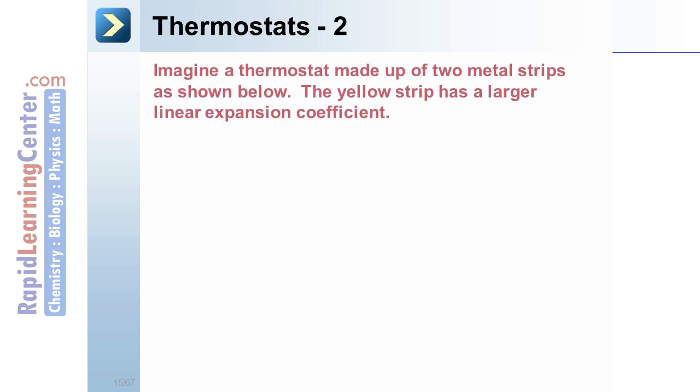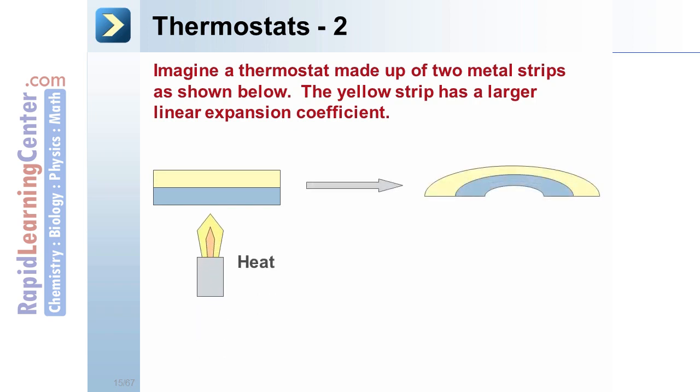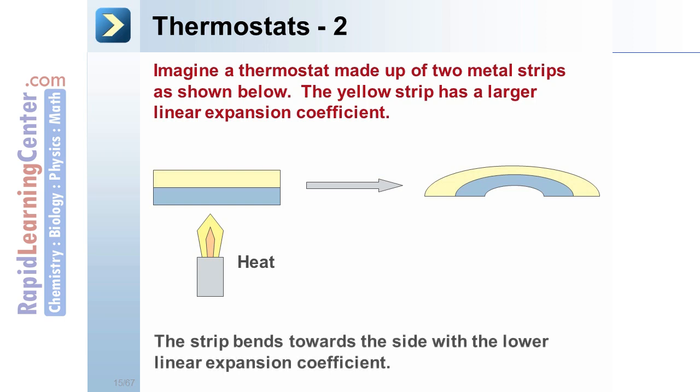Thermostats 2. Imagine a thermostat made up of two metal strips as shown below. The yellow strip has a larger linear expansion coefficient than the bottom. When they are heated, the top strip expanding more will become longer than the bottom one, thus it will bend. The strips bend towards the side with the lower linear expansion coefficient.